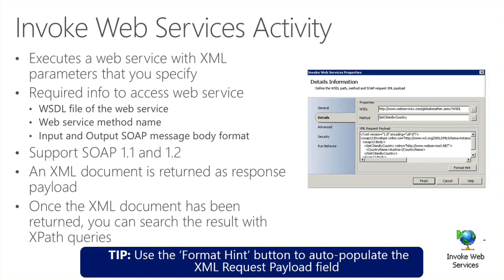Your web service may have multiple methods. In this example, there's one method called Get Cities by Country, which returns a list of cities by a specified country. You then define the XML request payload. There is a Format Hint button at the bottom of the window that helps you format the XML payload — that's actually the input for the web service method specified above. This activity supports SOAP 1.1 and 1.2, and the result will be published on the data bus as an XML document, which you can then parse using XPath queries via the Query XML activity.